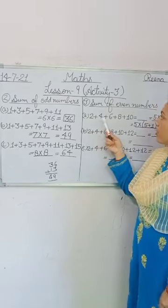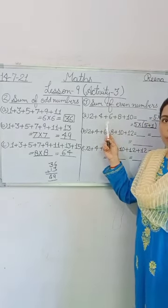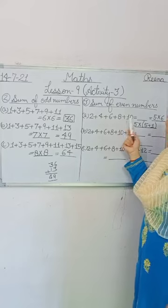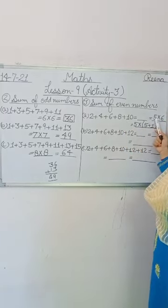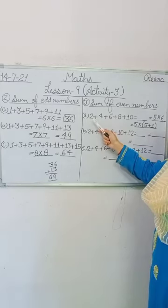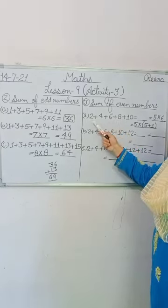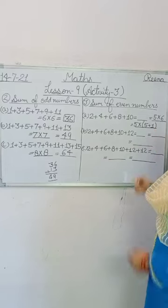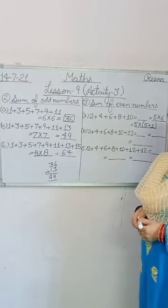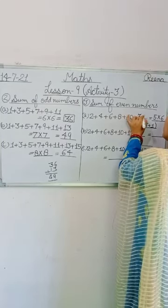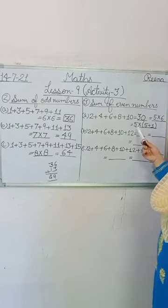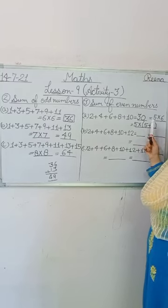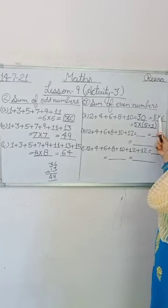Joh 2 ki table mein aate hain, unhe even numbers bolte hain. In all questions, you have been given all even numbers in addition form. In Part A, you have been given 2 plus 4 plus 6 plus 8 plus 10. The pattern gives dash equals 5 into 6. You have total 5 even numbers. So 5 into 6 — 5 sixes are 30. You also have 5 multiplied by (5 plus 1), and we expand 6 to get 5 plus 1.